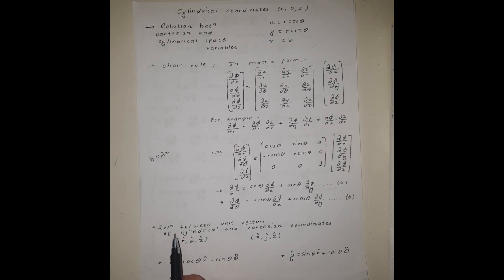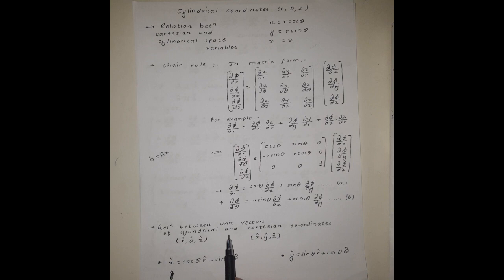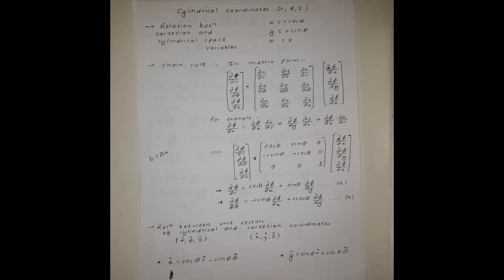Here we have a relation between the unit vectors of the cylindrical and the Cartesian coordinate system. r-hat, theta-hat, and z-hat are the unit vectors in the cylindrical coordinate system, and x-hat, y-hat, and z-hat are the unit vectors in the Cartesian coordinate system. These two expressions are the relation between the unit vectors of the cylindrical and Cartesian coordinate systems.